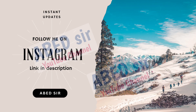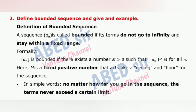Next important short question: Define bounded sequence and give an example. A sequence {aₙ} is called bounded if its terms do not go to infinity and stay within a fixed range. Formally, {aₙ} is bounded if there exists a number M > 0 such that |aₙ| ≤ M for all n. Here M is a fixed positive number that acts like a ceiling and floor for the sequence. In simple words, no matter how far you go in the sequence, the terms never exceed a certain limit.